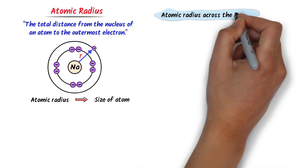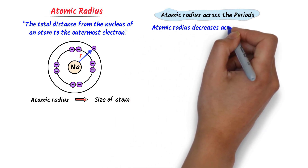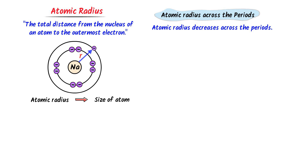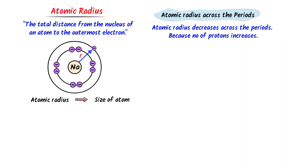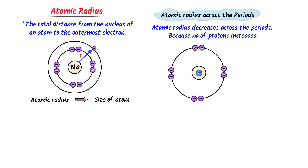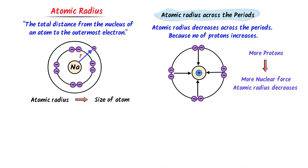Now we will learn the trends of atomic radius across the period. Remember that atomic radius decreases across the period — when you move from left to right in the periodic table, atomic radius decreases. It is because the number of protons increases. We know that electrons have negative charge and protons have positive charge. More protons means more positive charge, and more positive charge pulls the electrons towards the nucleus, so atomic size decreases.